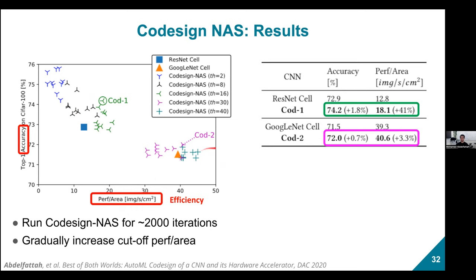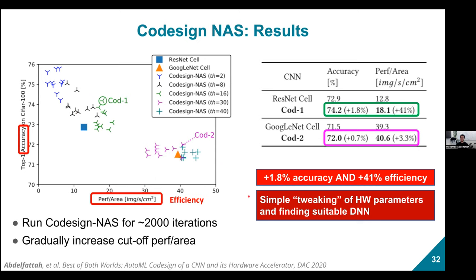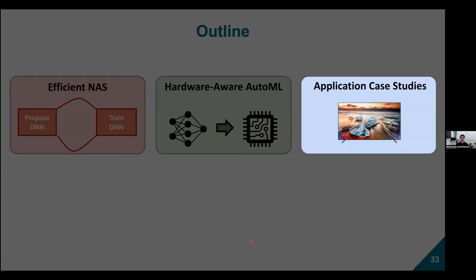We also found a model outperforming GoogLeNet on the same accelerator with similar efficiency gains. The bottom line: even this simple proof of concept, just by adding hardware parameters to the search problem, was able to find model-hardware pairs significantly more efficient than those designed by hardware experts. This is a promising direction and really just a proof of concept with much more work possible.